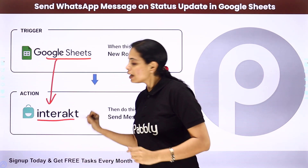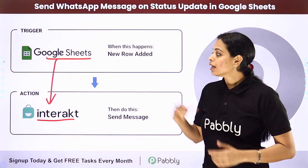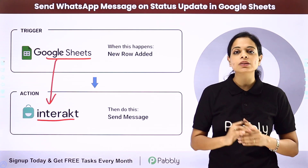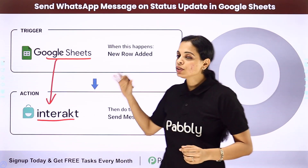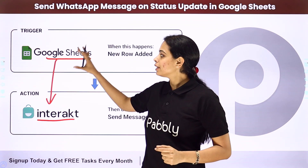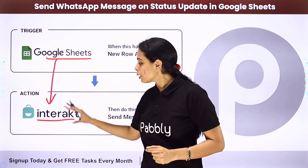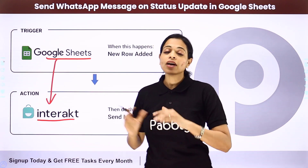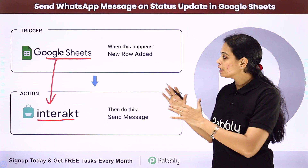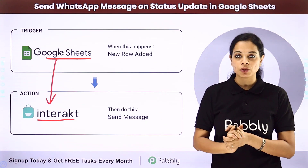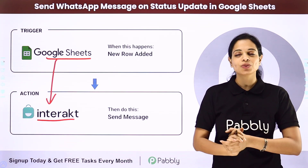So here you will have to do an integration between the two applications. Interact is a platform which helps you in sending WhatsApp messages. This can be done using Pabbly Connect, where your trigger application would be Google Sheets and your action application would be Interact. To understand how you can integrate and automate this entire process, let me take you to my screen.